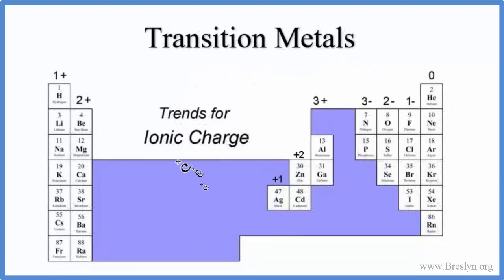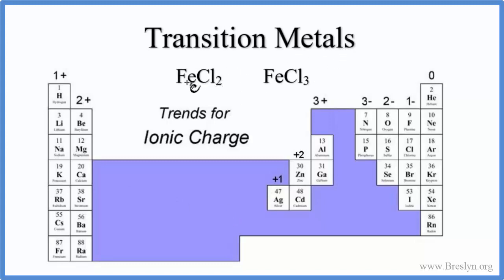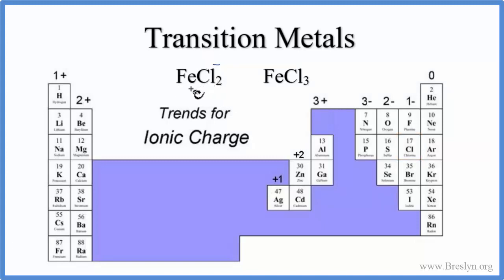For transition metals — those are the metals in the middle of the periodic table, along with some near transition metals — we don't know what the charge is. They can have variable charges. The way we figure it out is by looking at what the metal is bonded to. We have two neutral compounds: FeCl2 and FeCl3. We know they're neutral because there are no charges written after them. Chlorine has a charge of 1-, and we have two of them, so the total is 2-, meaning the iron must be 2+.